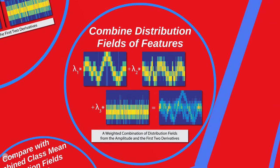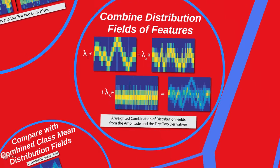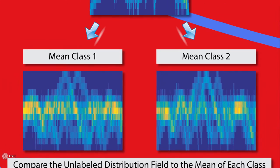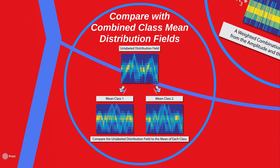For each curve, we then create a combination of the feature distribution fields based on optimal weights. Then we take the combined distribution fields for the training data and calculate the average distribution fields for each class. We compare the combined distribution fields for the testing data to the average distribution fields for each class of the training data and assign the label based on the closest distance to the class means.